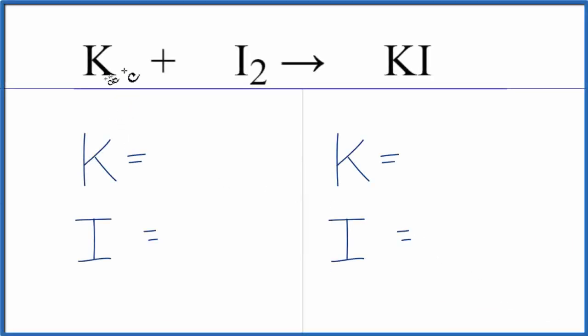In this equation, we have K plus I2 yields KI. It's potassium plus iodine gas that gives us potassium iodide.